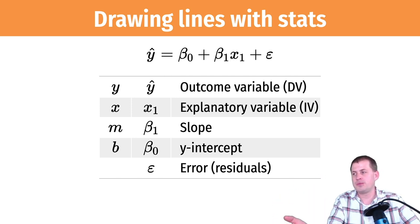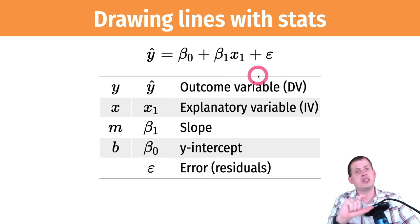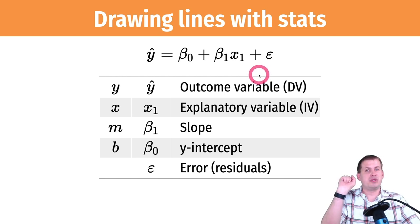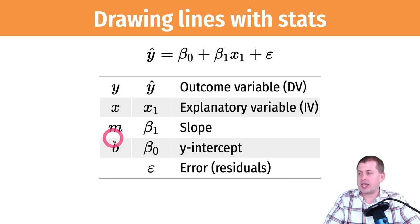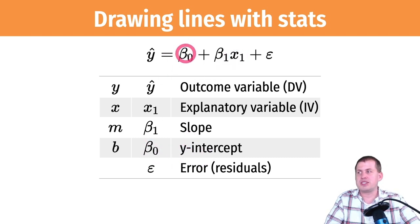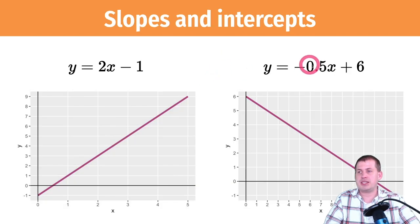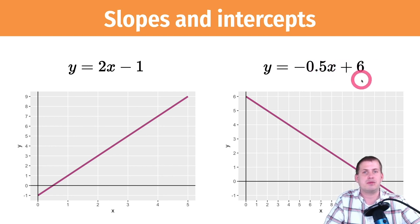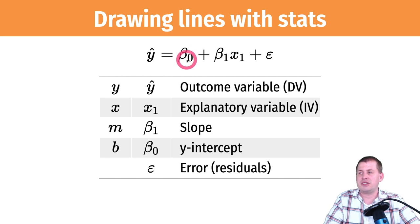x1 is our explanatory variable or independent variable — if we're asking whether humidity influences temperatures, humidity is the explanatory variable. Instead of m and b, we use beta coefficients. β1 is the coefficient in front of the explanatory variable — that's the slope — and β0 is the y-intercept. Statisticians typically put the intercept first, whereas in y = mx + b it comes at the end, but algebraically it's the same thing.